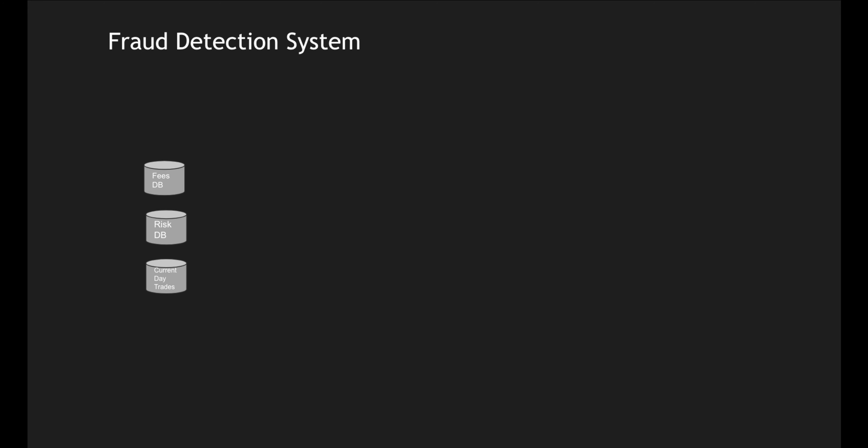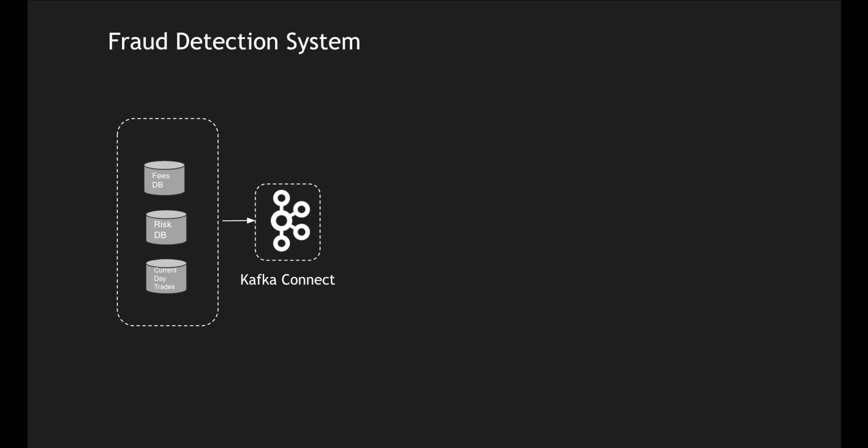I'm going to create a fraud detection system where I copy all these messages and integrate with different data sources for processing. I'll use Kafka Connect to connect all these data sources and copy messages into a Kafka topic. Kafka Connect here signifies individual processes and also clusters — you can deploy it as an individual process or as a connect cluster.